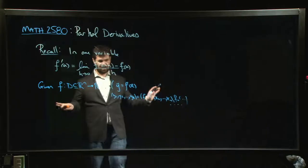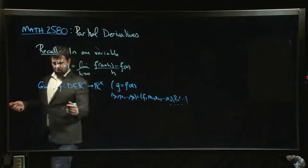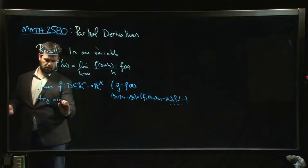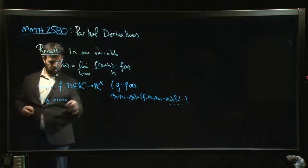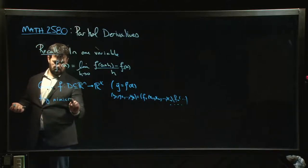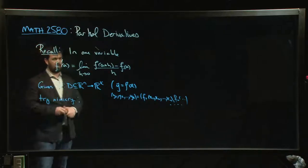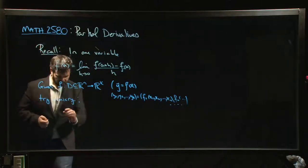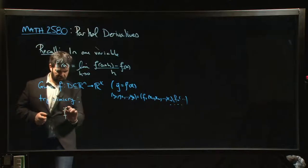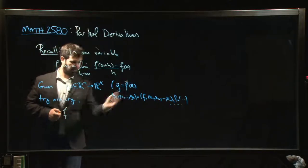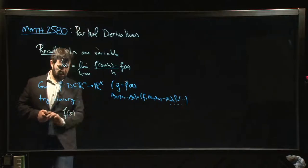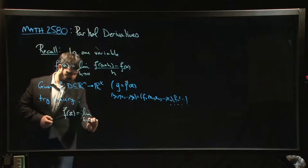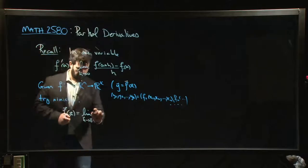This gets pretty tedious, so we like the vector notation, it's a lot faster. So you might be tempted to try to mimic the definition that we had in one variable and see where it takes us. So we say okay, well let's do something like this: f vector prime, maybe that should be a vector too, at a, is what? The limit as the vector h approaches the zero vector of f of a plus h minus f of a over—